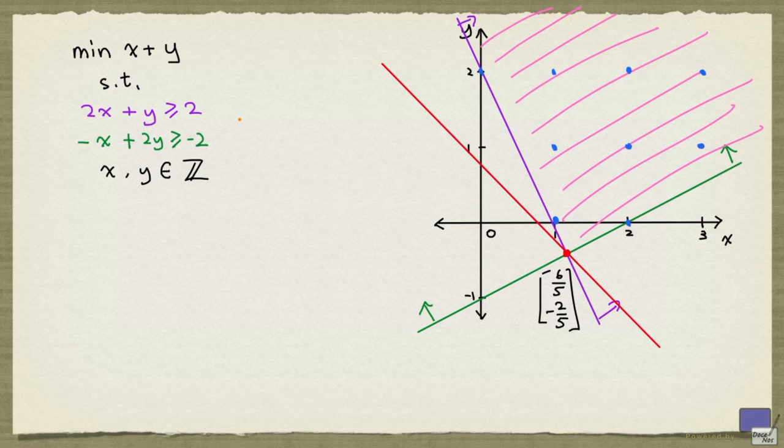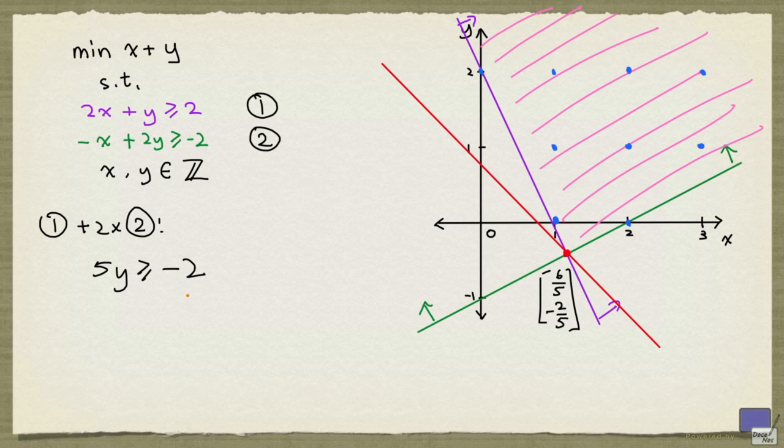So, if I label this constraint 1 and this 2, and take 1 plus 2 times 2. In other words, I'm adding 1 times the left-hand side of 1 to 2 times the left-hand side of 2, and that gives us 5y. And the right-hand side is 1 times 2 plus 2 times negative 2. And that is simply negative 2.